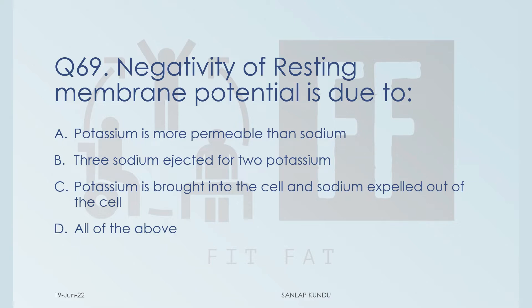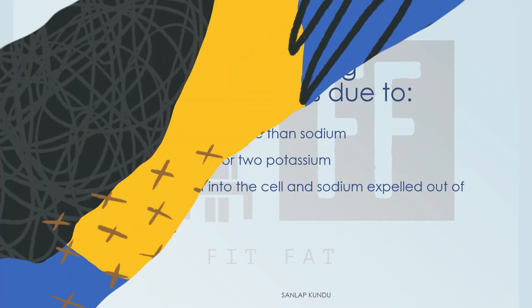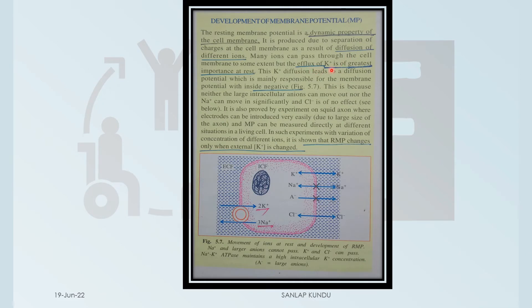So let's check whether options A, B, and C are true or not one by one. If you read these lines, you will see that the main responsible factor to keep negative resting membrane potential is potassium diffusion. As sodium plus cannot move in significantly, potassium is more permeable than sodium, so option A is correct.